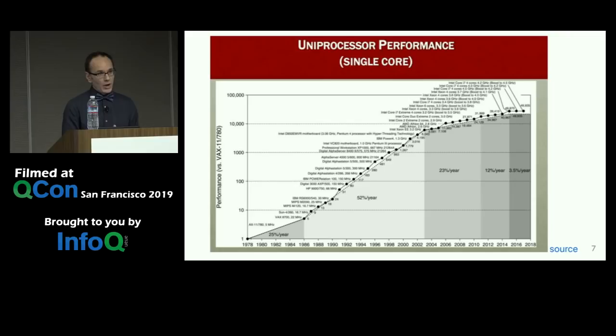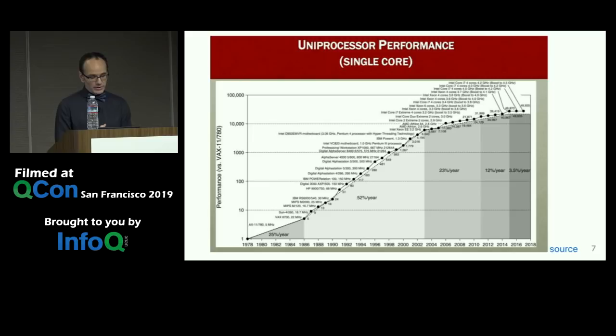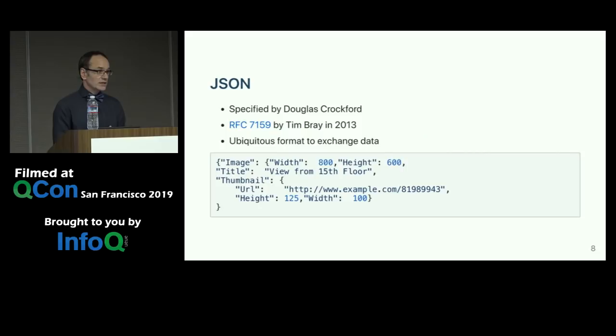Some people say your processor core will get much faster next year — that's what people said in the 90s. But of course, we all know that our cores are not getting much faster with each passing year. So if we're going to reach gigabytes per second processing data, we'd better have good software to do it.